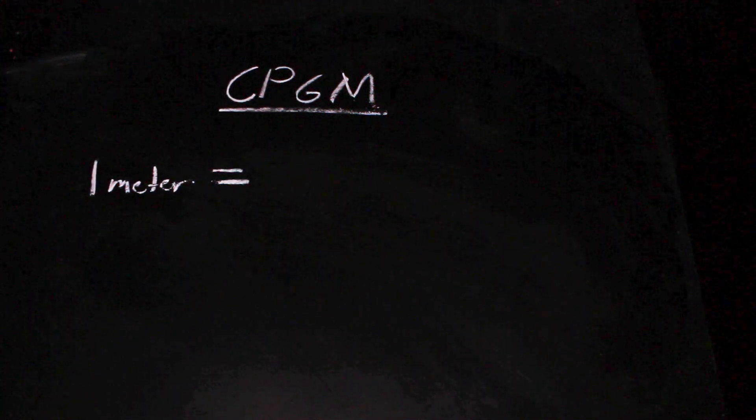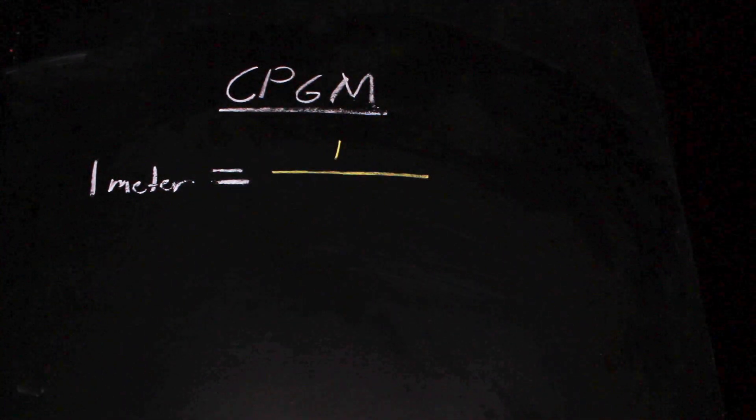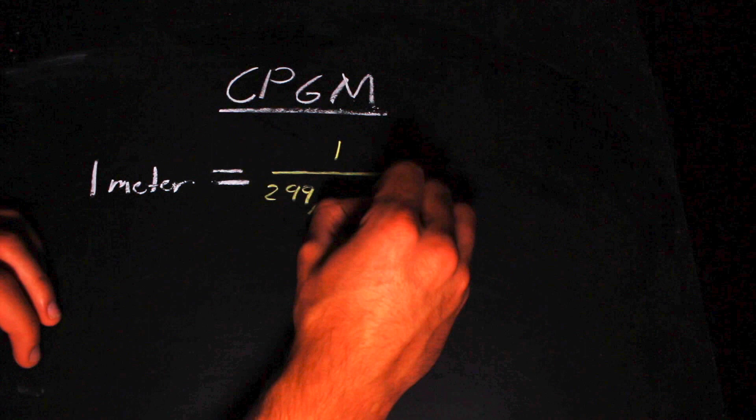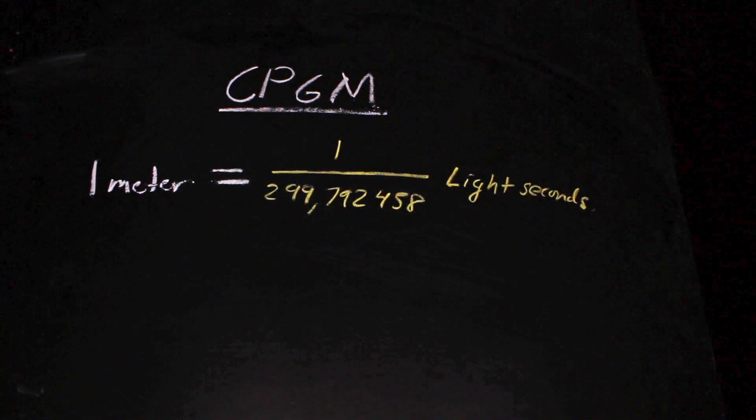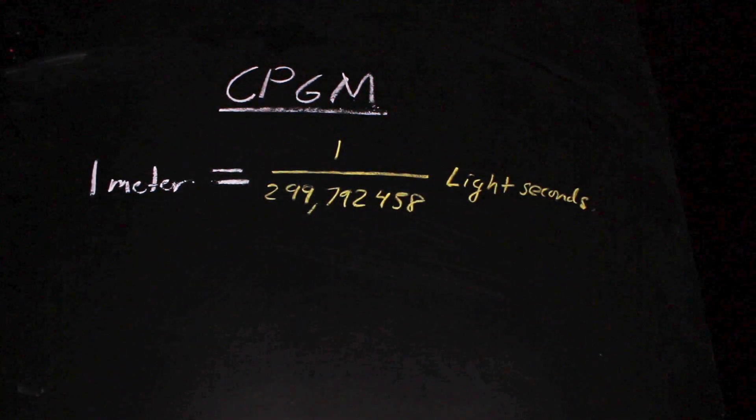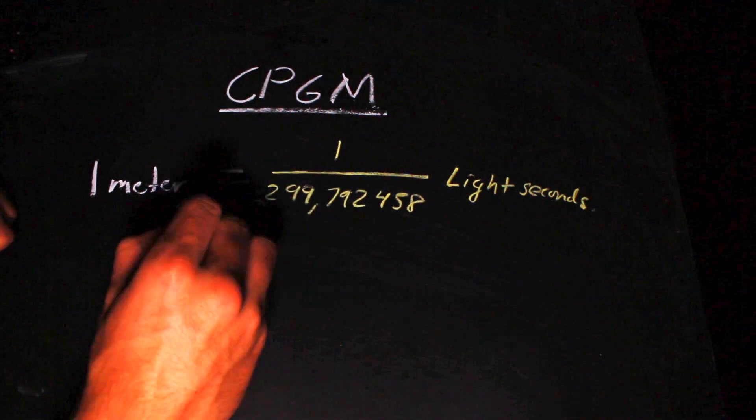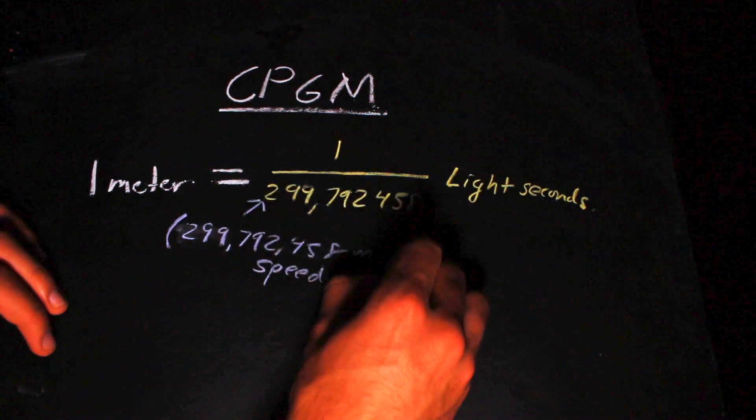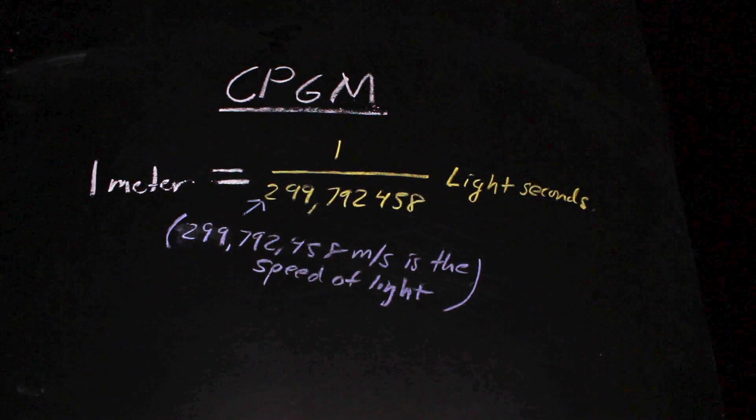For instance, the definition of a second is so good that the meter is defined by the CGPM as the length of the path light travels in a vacuum over the time interval of around 3.33564 times 10 to the negative 9th seconds.